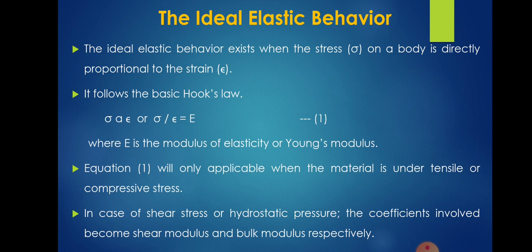The ideal elastic behavior. The ideal elastic behavior exists when the stress, that is sigma, on a body is directly proportional to the strain, that is epsilon. It follows the basic Hooke's law, that is sigma is directly proportional to epsilon. That is, sigma by epsilon is equal to capital E. Here E is the modulus of elasticity or Young's modulus. Equation 1 will only be applicable when the material is under tensile or compressive stresses. In case of shear stress or hydrostatic pressure, the coefficients involved become shear modulus and bulk modulus respectively.